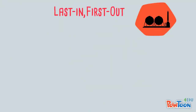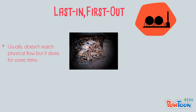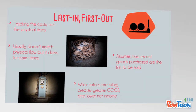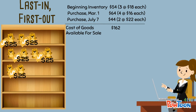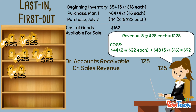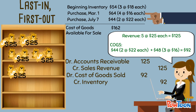In Last In First Out, you are not necessarily matching the costing method to the movement of the physical goods in most cases. However, it can be true for certain types of inventory. If we went back to our store and showed the sale of the same five bears, under LIFO the cost of goods sold would be much higher at $92. This is because our wholesale prices for the bears were more expensive in the most recent purchases.